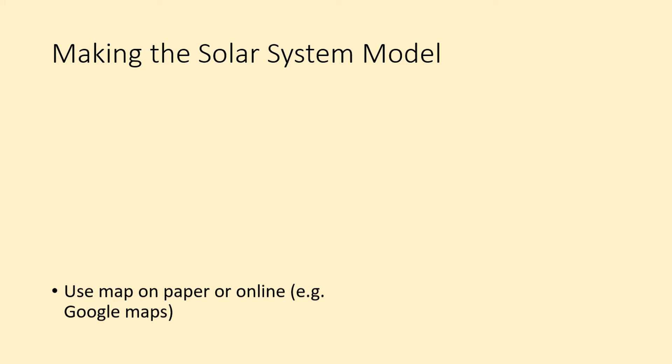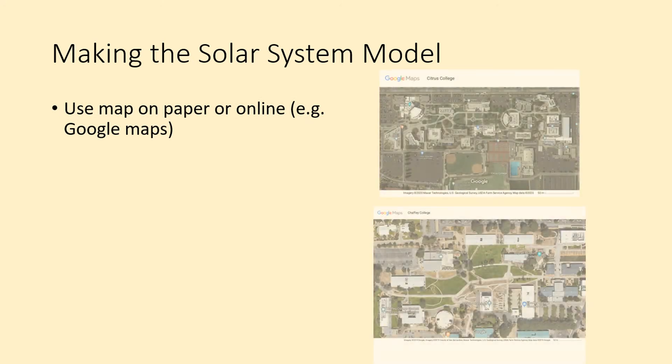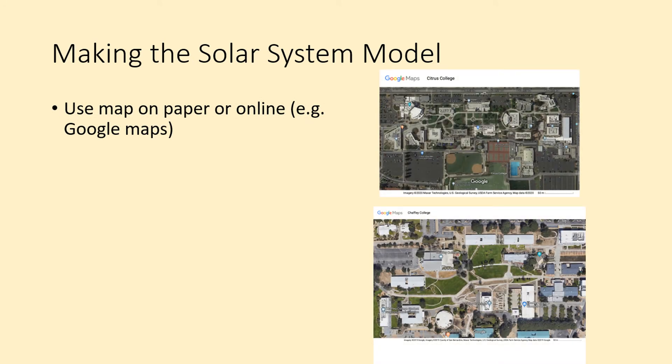In this part of the lab, you should start by getting a scale map of some place of interest to you, like these maps of Citrus and Chapey Colleges. You can use an already existing map, or print out an online map.